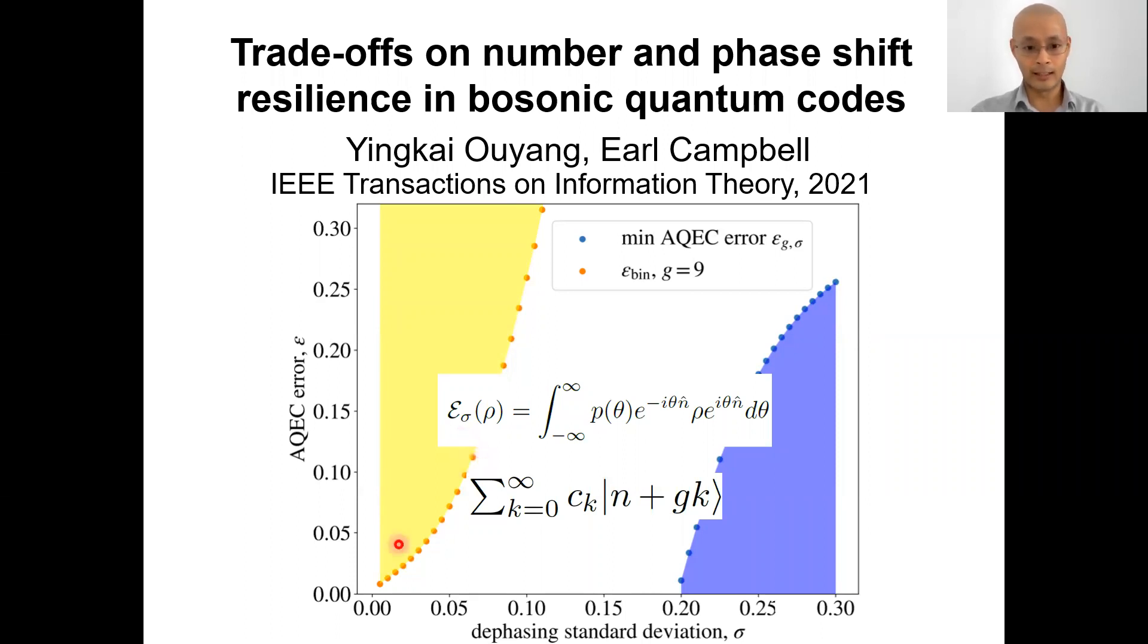What we show is that the best binomial codes can achieve this type of approximation error. But we also show the blue line over here that no approximate error correction code in this g gap family can correct, can have an error that is less than this blue shaded region over here.